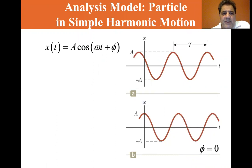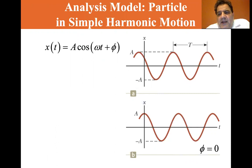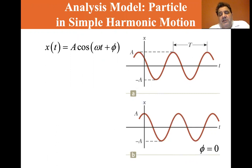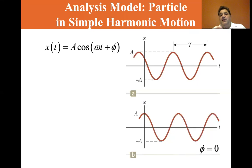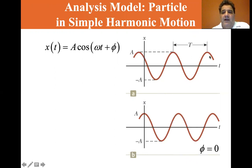What does A cosine(ωt + φ) look like? It's a sinusoidal, harmonic oscillation shape. The phi is a little offset — if it were just cosine(ωt), it would start with the peak occurring right at the zero axis. T is the period.